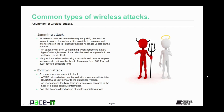The jamming attack: all wireless networks use RF channels to transmit data on the network. It is possible to create enough interference on that radio frequency channel that it is no longer usable on the network. An attacker will often use jamming when performing a DOS, or denial of service, type of attack. However, jamming can also be used as a prelude to an evil twin type attack. Many of the modern wireless networking standards and devices employ techniques to mitigate the threat of jamming.